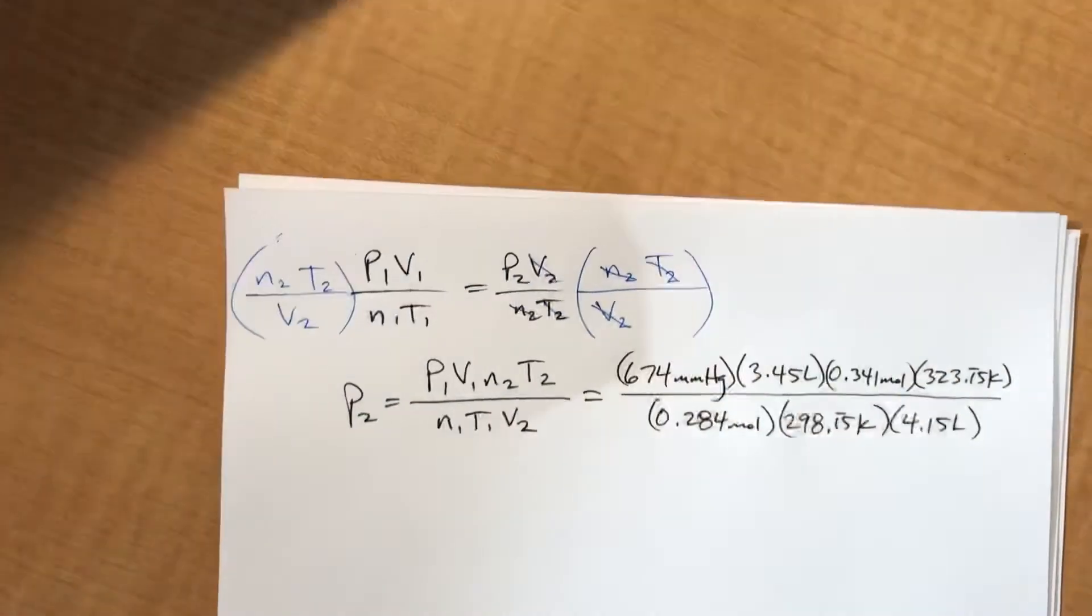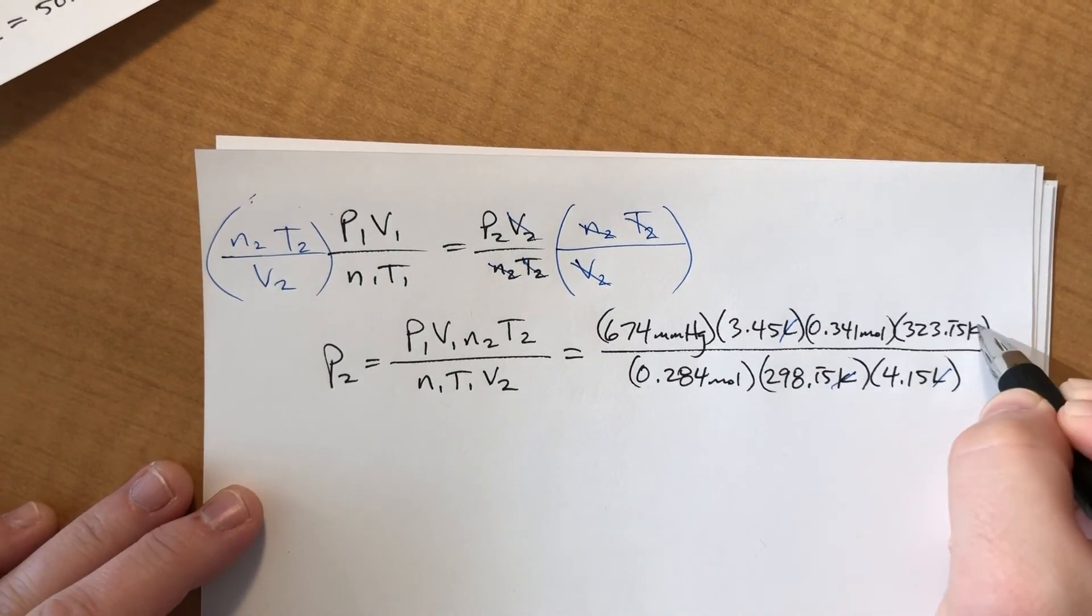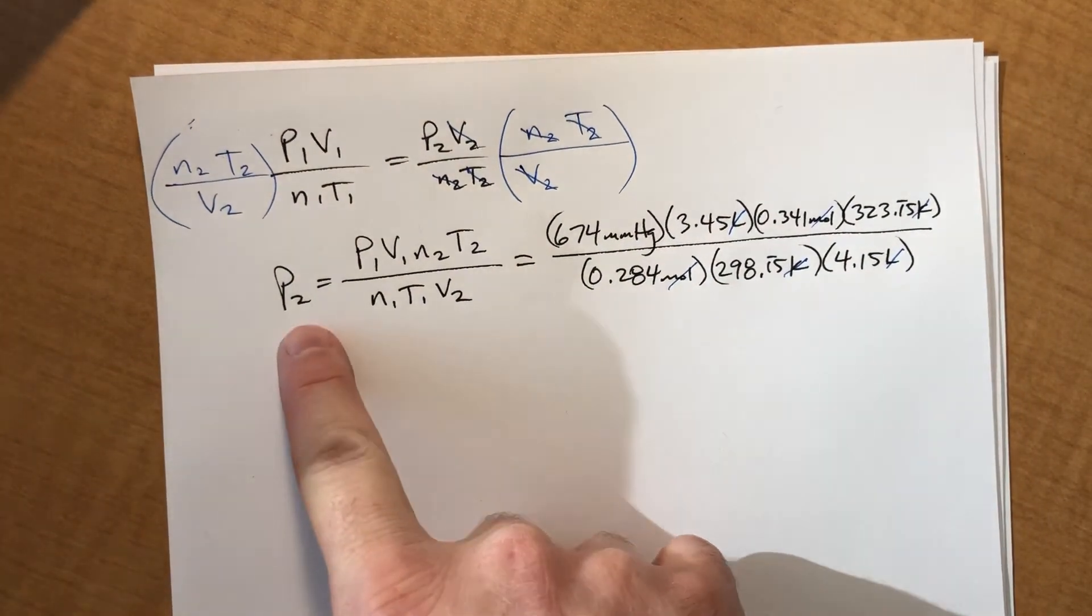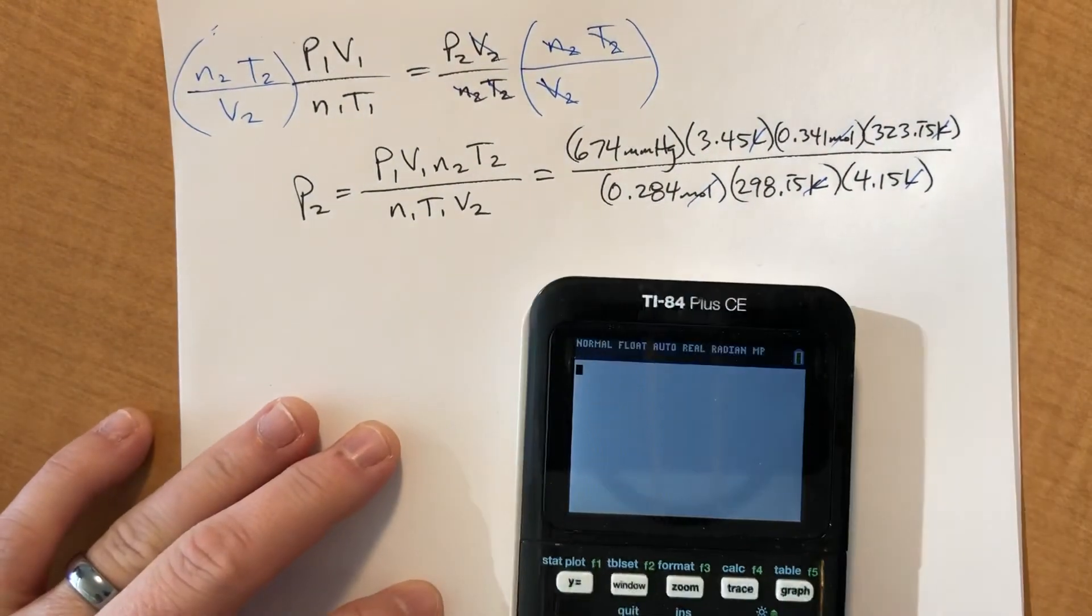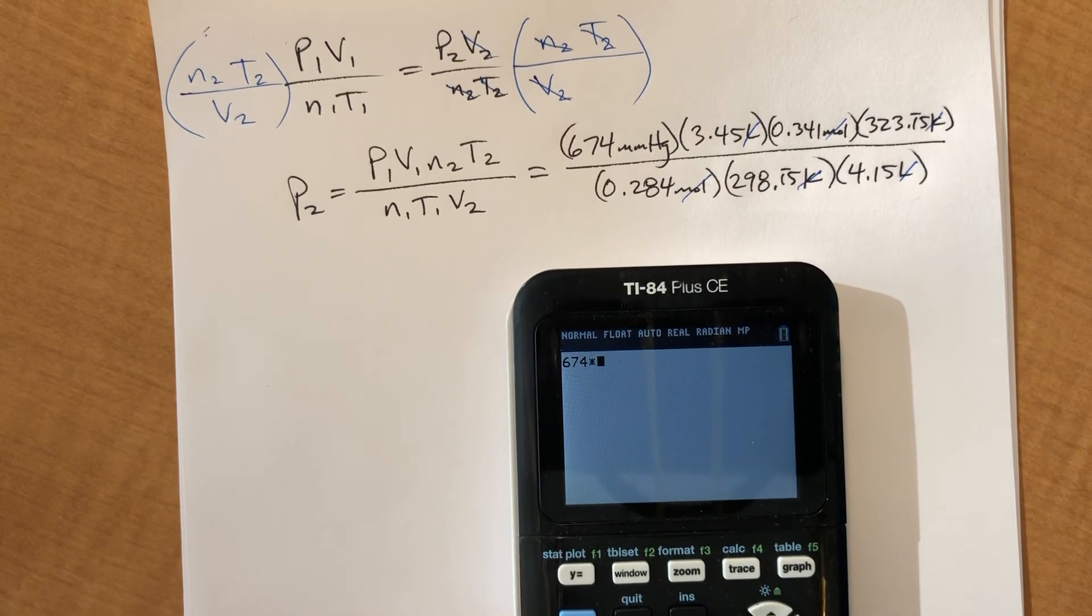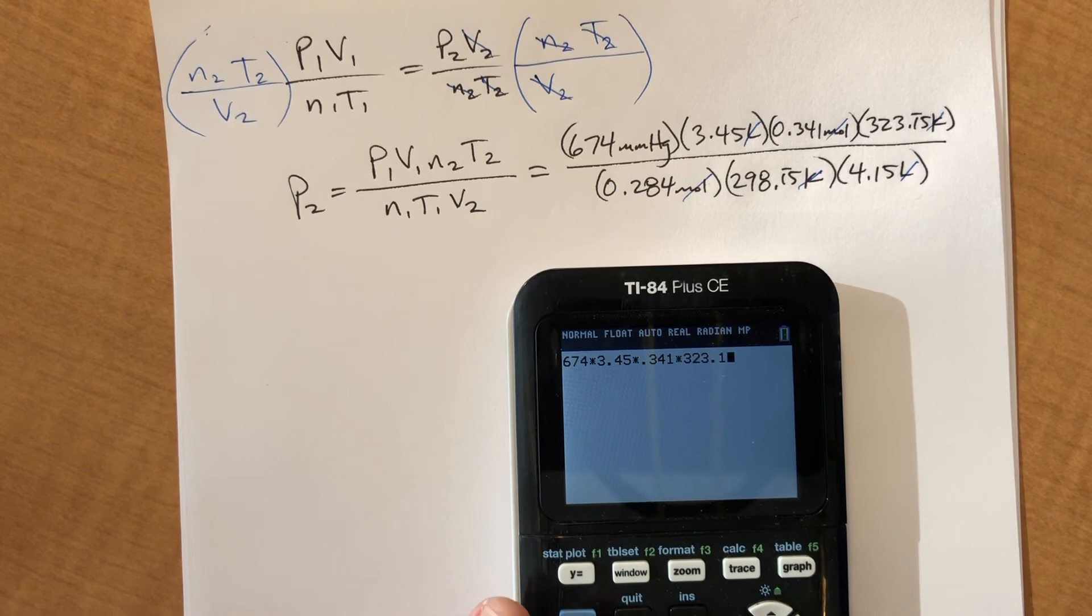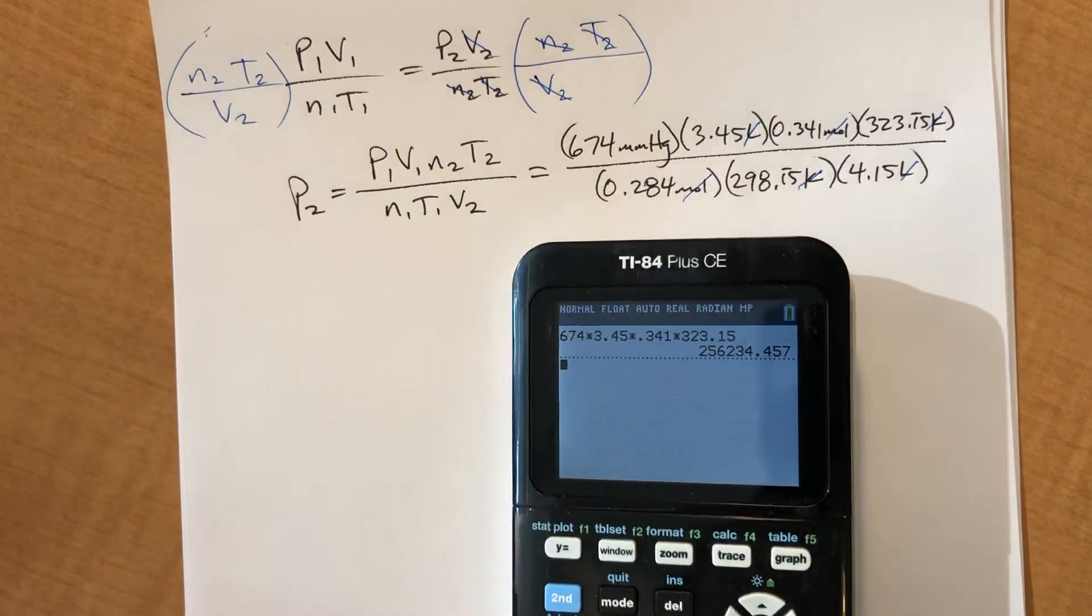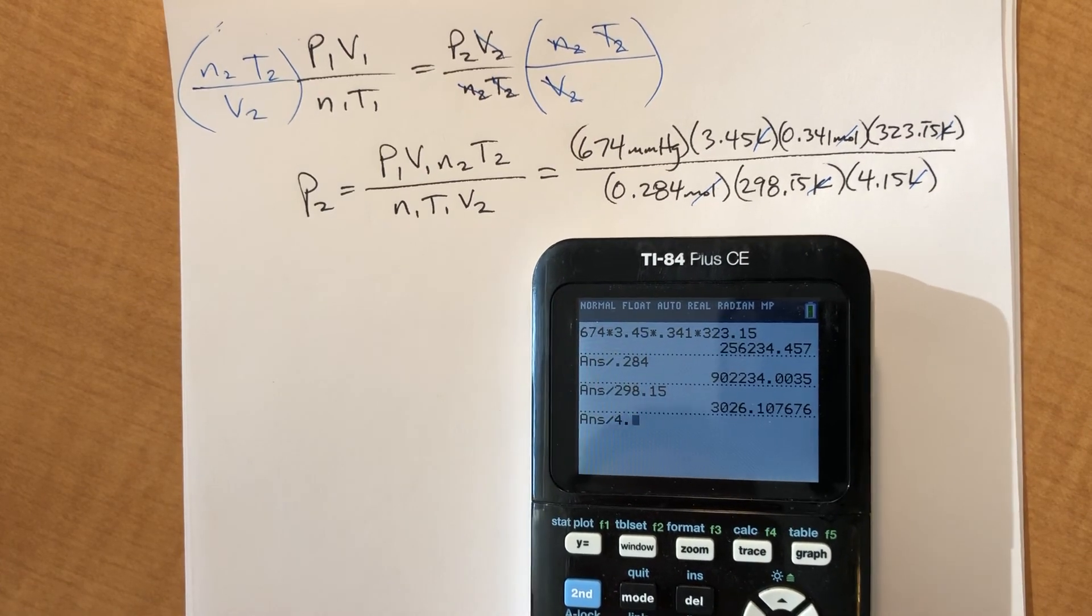So, hopefully everything cancels out, and hopefully I plugged everything in correctly, but the liters will cancel out, Kelvins will cancel out, moles will cancel out, and be left with millimeters of mercury, which is a pressure unit, which is great, because we're solving for pressure. So, plug everything in, 674 times 3.45 times 0.341 times 323.15. Hit equals, get a huge number, but then I need to divide by all the stuff on the bottom. Divide by 0.284, hit equals, divided by 298.15, hit equals, divided by 4.15, hit equals.